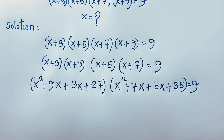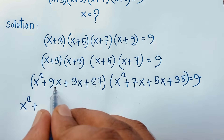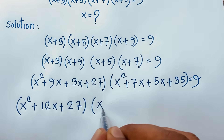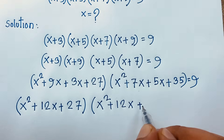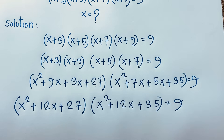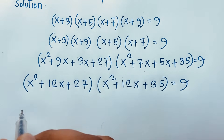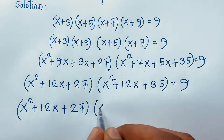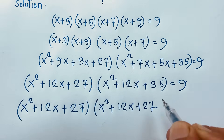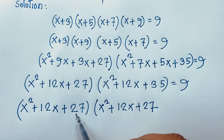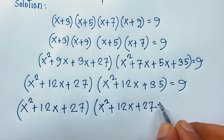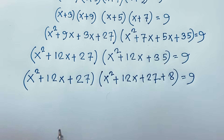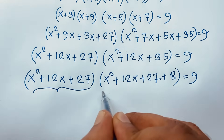Now you can see that both expansions share x² + 12x + 27. The second bracket has x² + 12x + 35, which equals x² + 12x + 27 + 8, because 27 + 8 = 35. So both expressions differ only by 8.